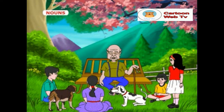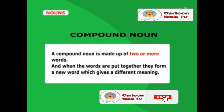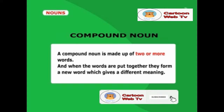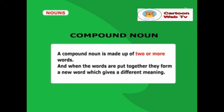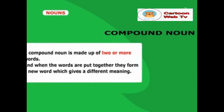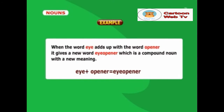Children, I have to say something about compound nouns. A compound noun is made up of two or more words and when the words are put together, they form a new word which gives a different meaning. For example, when the word eye adds up with the word opener, it gives a new word eye-opener, which is a compound noun with a new meaning.